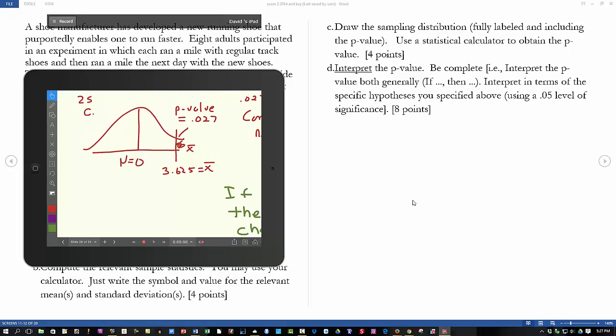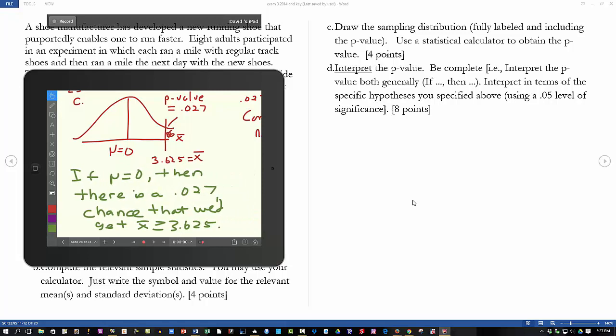And then our if-then statement. I'll bring the picture back in here. If the population mean is zero, and that's what we have here, then there's a p-value chance. It's this next part that sometimes people have trouble with, that we get a sample statistic, an x-bar that's greater than or equal to 3.625. The reason it's greater than is because our alternative hypothesis was mu greater than zero. So whatever direction or directions that goes, that's the direction the p-value will go.